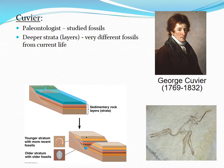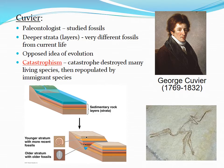Cuvier found that the lower in the earth you go, the older the fossils were, and that the fossils at the very bottom were very different from those in younger earth layers. He actually opposed the idea of evolution. His idea was catastrophism — the idea that some natural catastrophe destroyed many living species, and then new species took their place, with no evolution, just mass destruction followed by new organisms taking over.